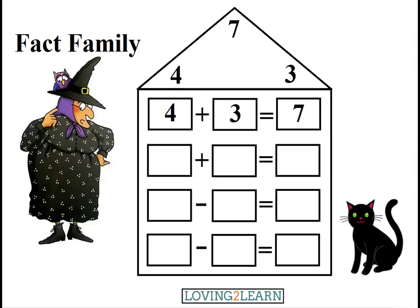Midnight tells me to grab the 3. We'll put the 3 plus 4 equals what? 7! That's right! So we can say 3 and count on by 4: 3, 4, 5, 6, 7, or we just know that 3 plus 4 equals 7.